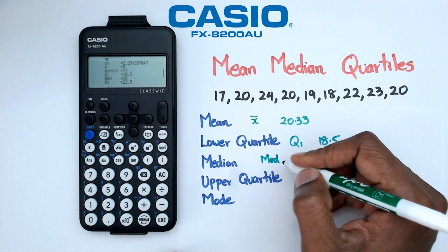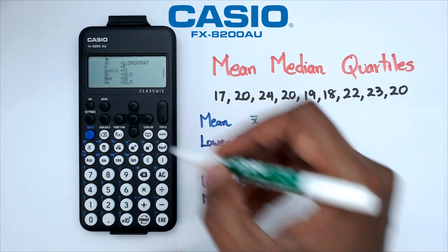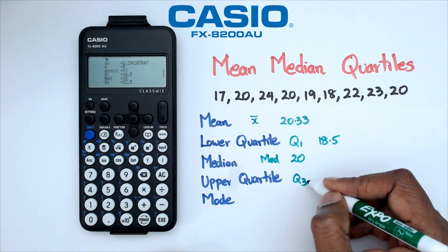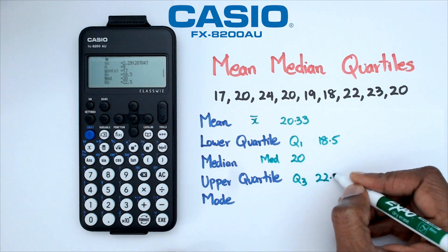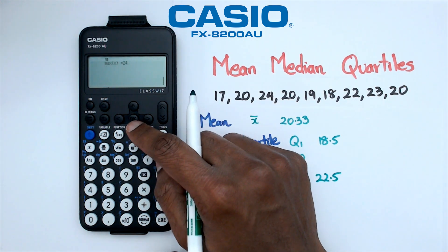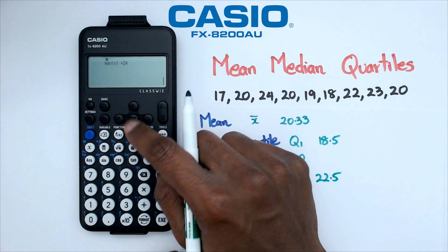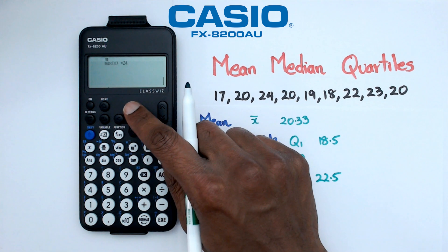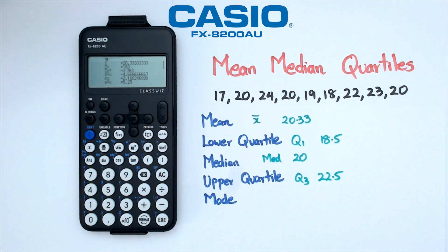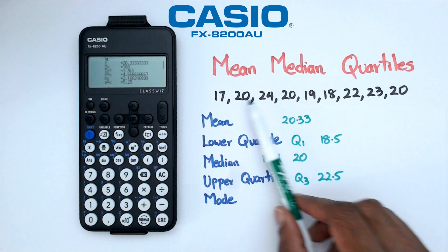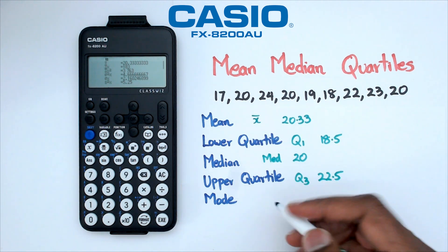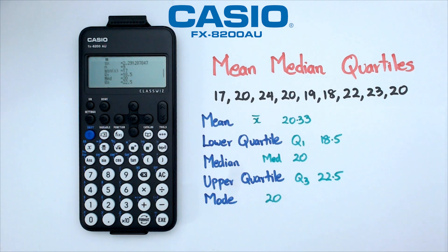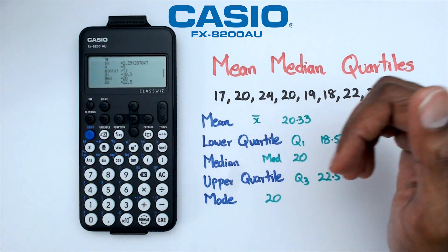The median is shown as 'med', and the median is 20. The upper quartile is Q3, which is 22.5. We also have the max, which is equal to 24. Unfortunately this particular calculator doesn't display the mode, but we can figure it out manually — looking at the data, we can see that 20 appears three times, so the mode is 20. And that's pretty much how you calculate sample statistics for this data on this calculator.